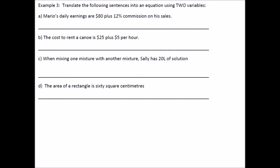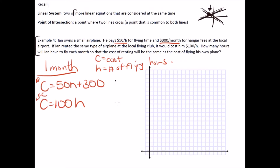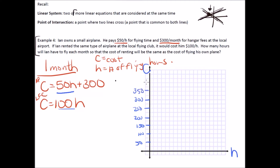For example 3 we're going to translate sentences into equations using two variables, and we'll plot both equations — cost versus number of hours. Let's scale the vertical axis in $50 increments: $50, $100, $150, $200, $250, $300, $350, $400, $450.